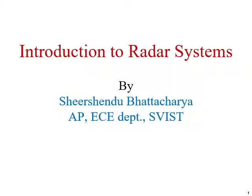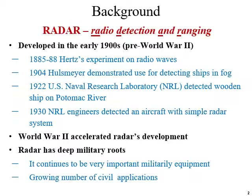In this lecture series, we are trying to understand the basics of radar systems. Radar means radio detection and ranging. It has two main objectives: one is detection, and another is to measure the distance of the target from the radar. The means by which it detects and measures the range is the radio wave.